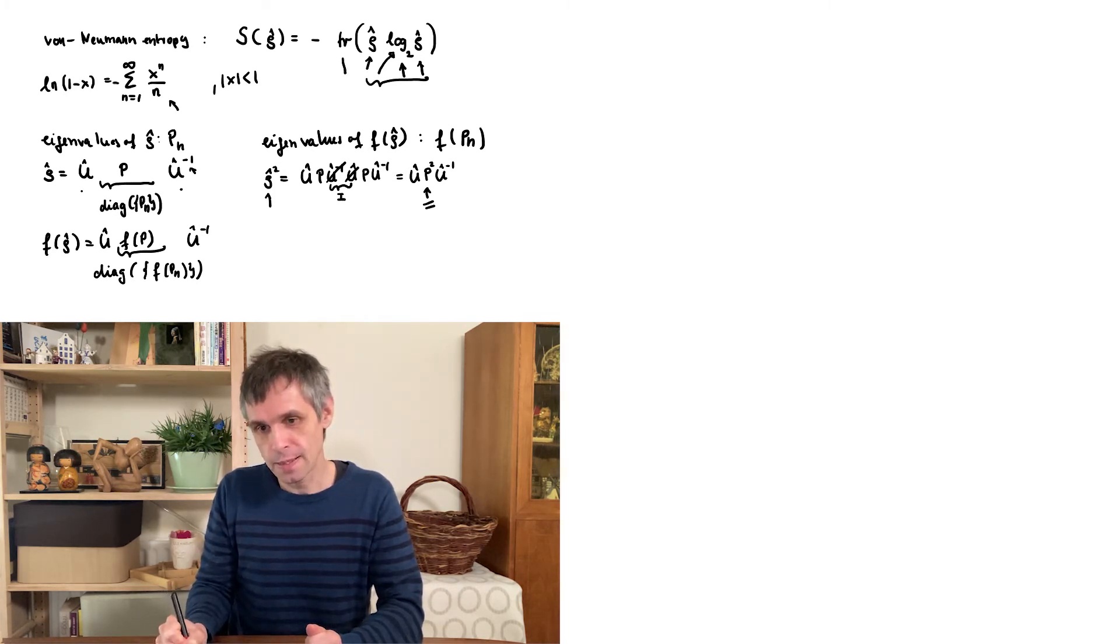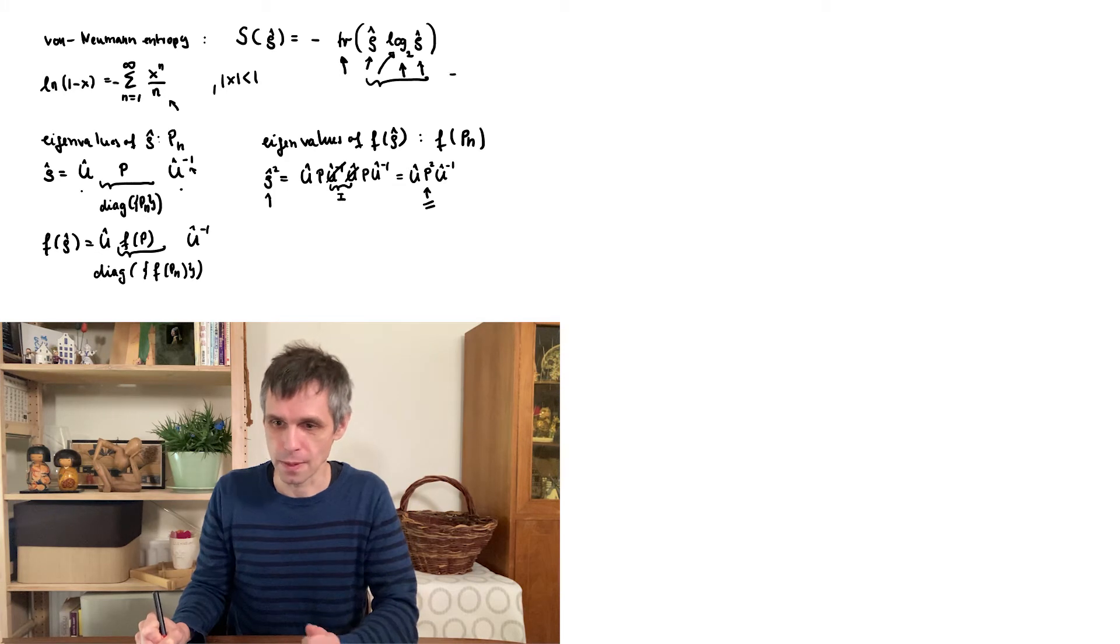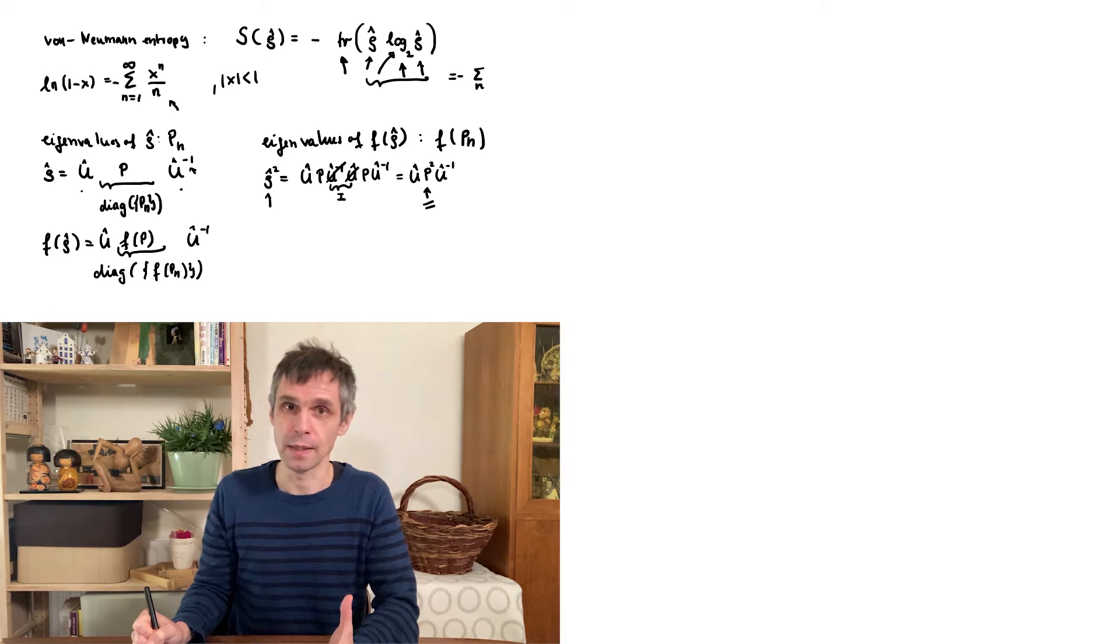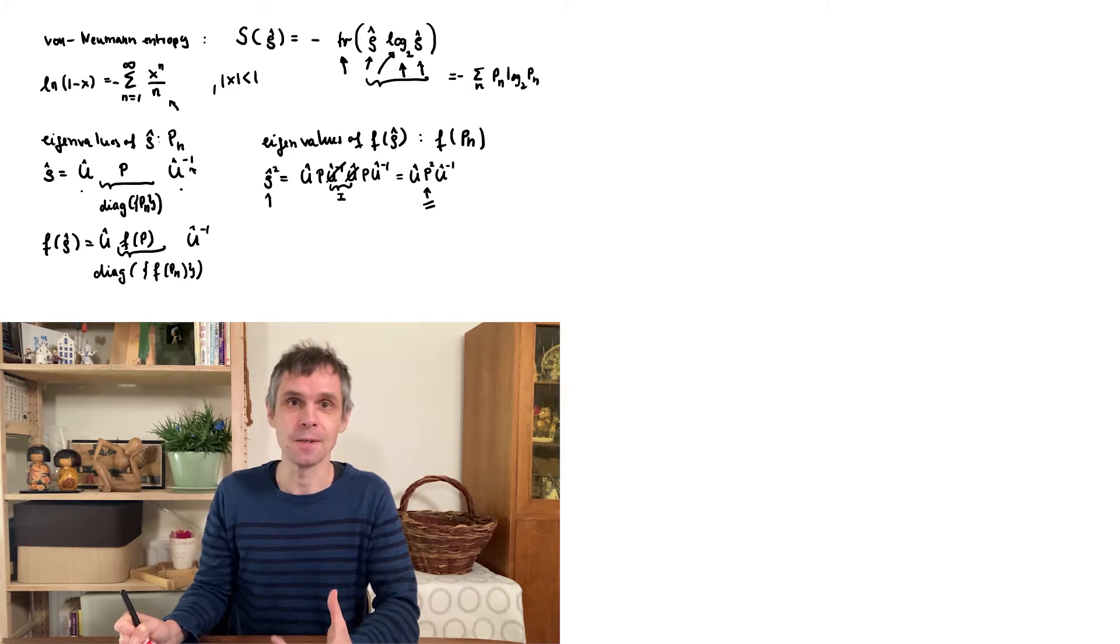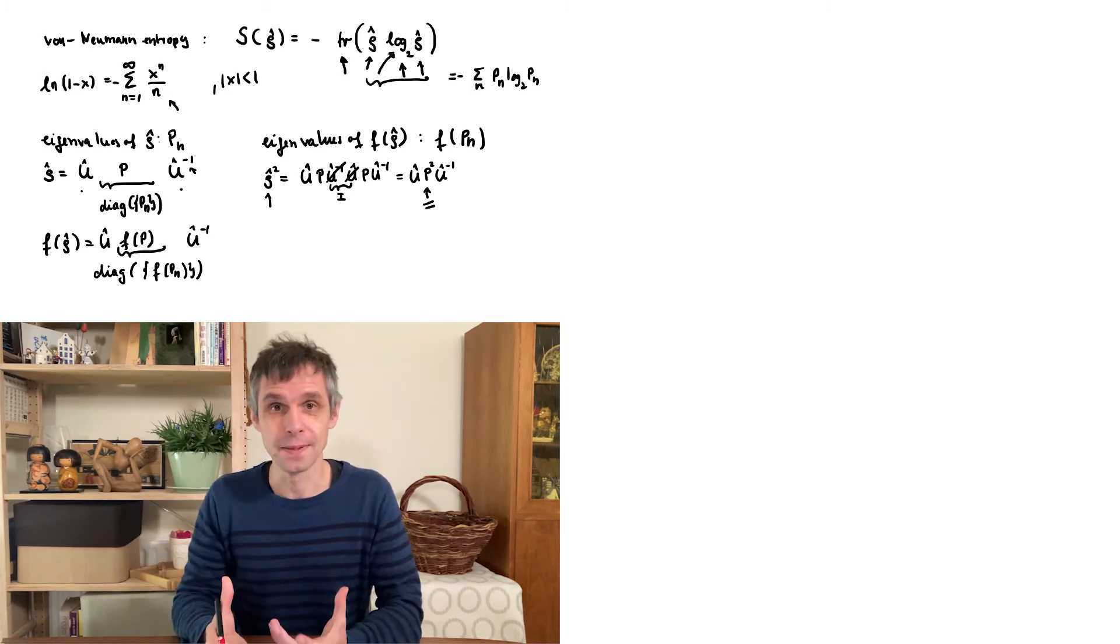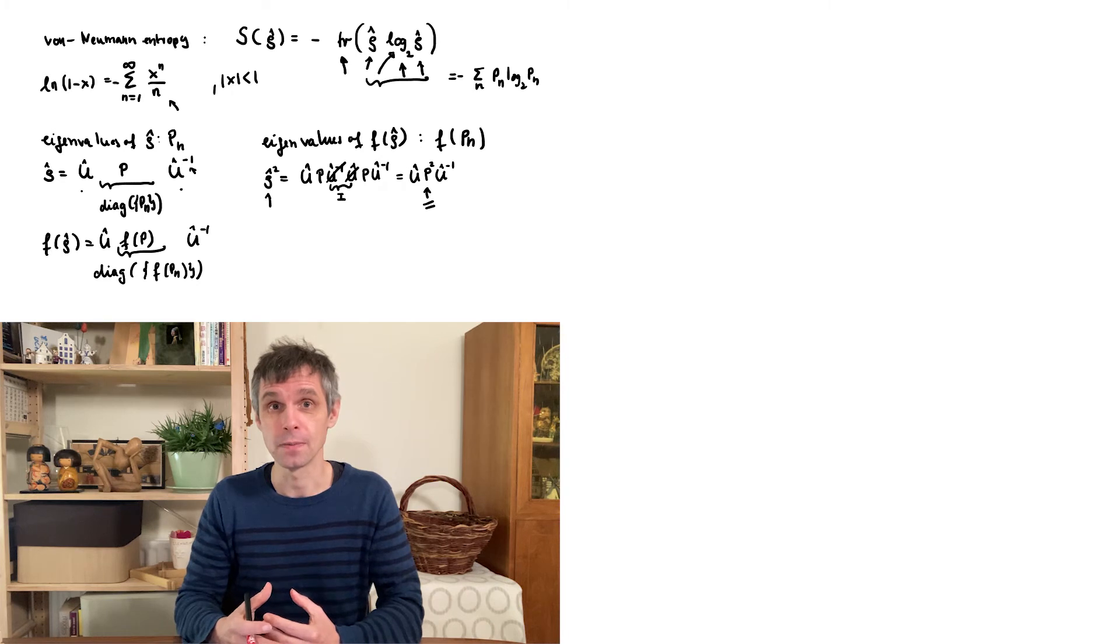So now we can utilize that the trace of a matrix is the same as the sum of its eigenvalues. So the upshot is that we can replace this trace by a sum over all the eigenvalues. But instead of summing all the eigenvalues, we sum the function of these eigenvalues that we encounter here with rho. So just P_n times log to P_n. And now this is exactly of the form of the Shannon entropy. Nonetheless, this is now the entropy of a quantum system. So a system that is different from a classical system. And we have seen with the notion of entanglement that these systems can already behave very differently.